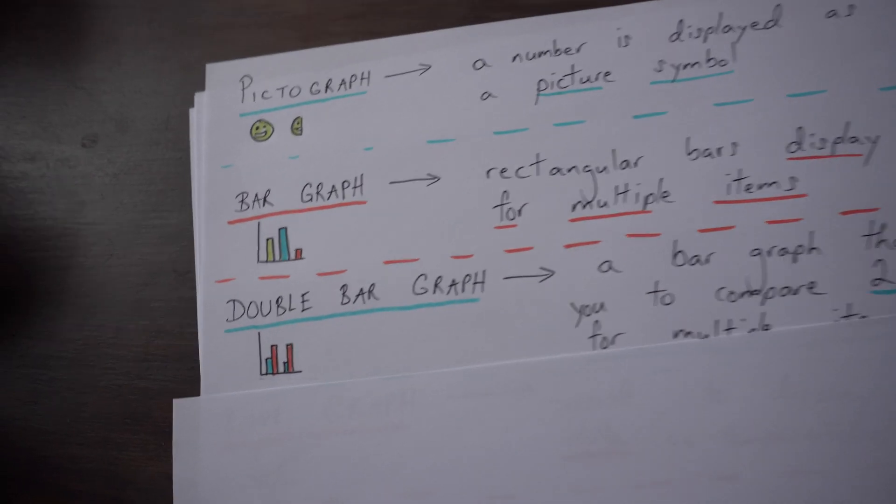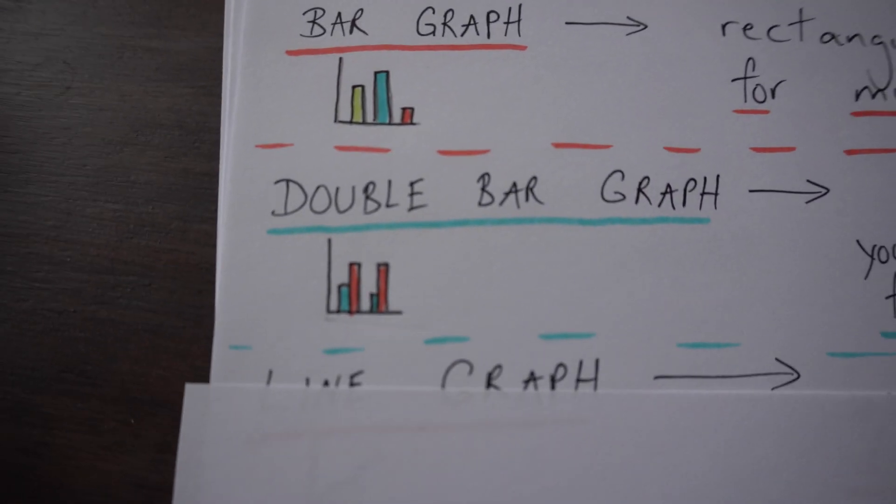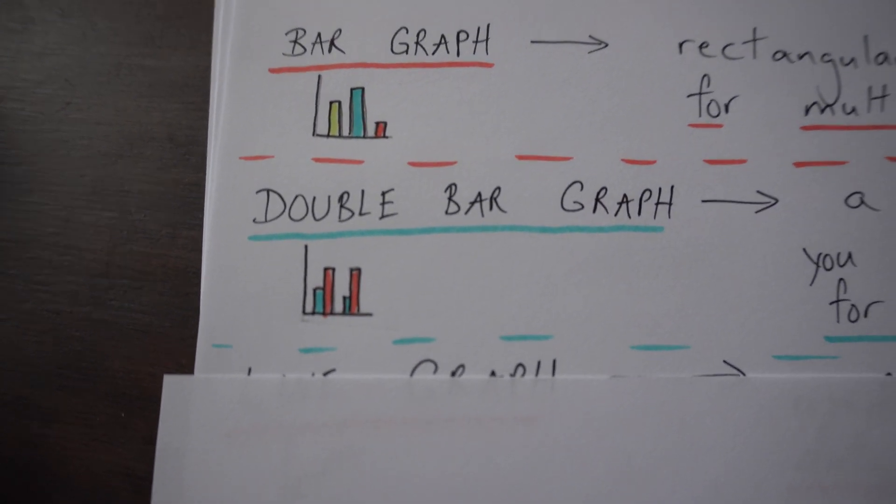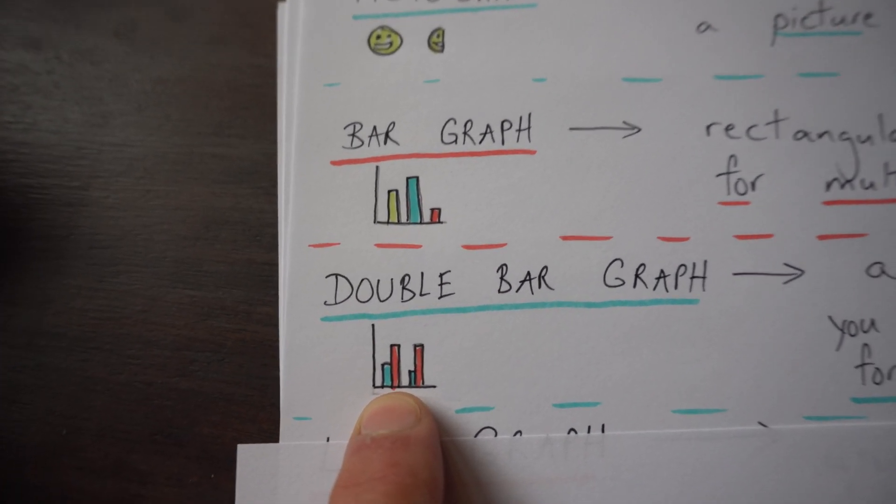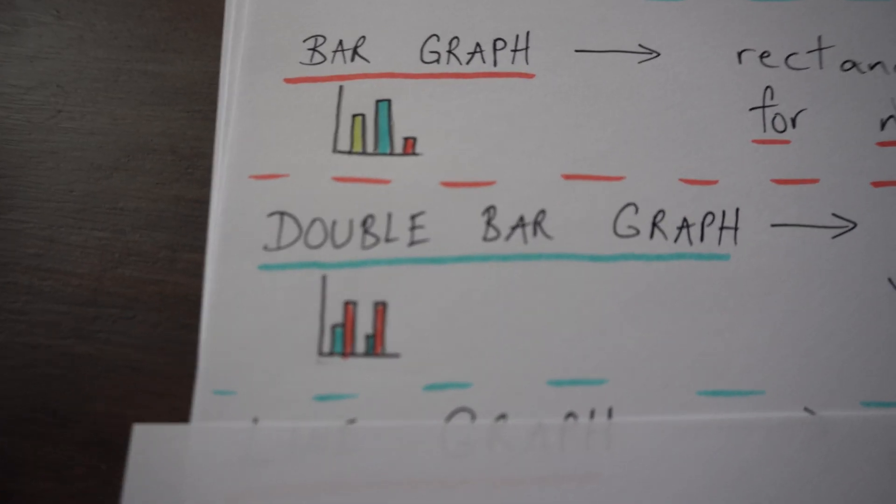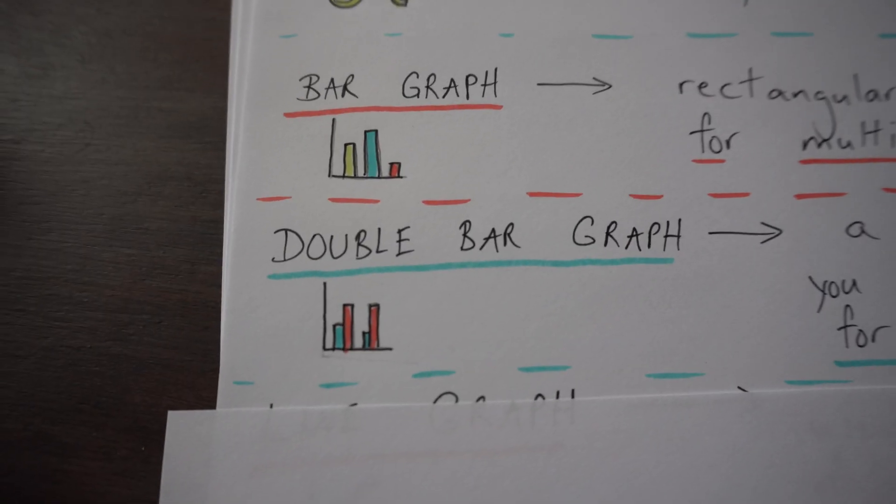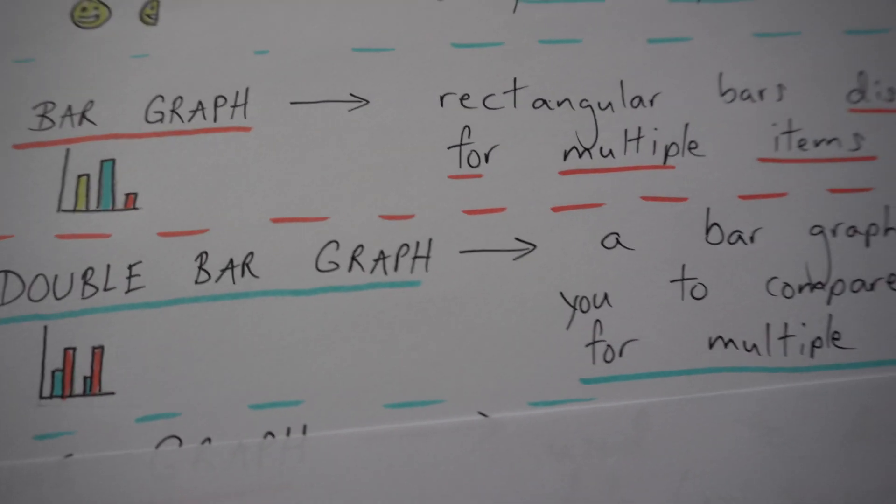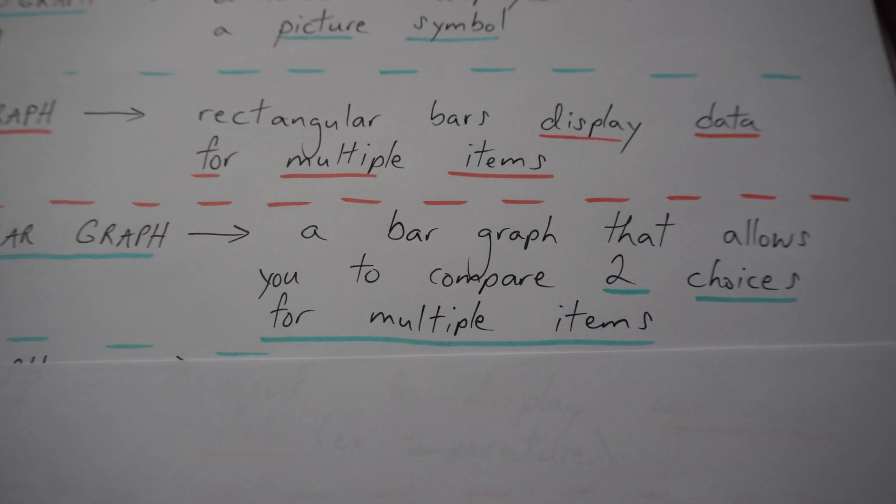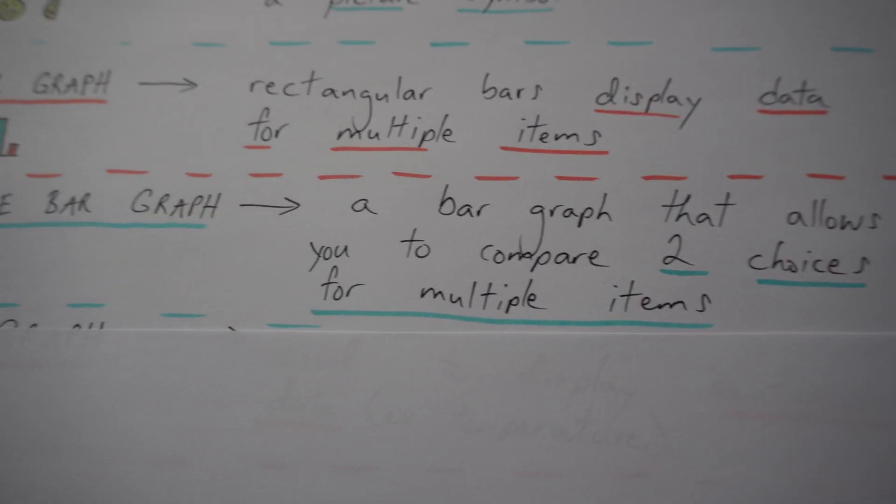The next one is a double bar graph, and that's basically like two bar graphs in one. You'll see how I colored one blue and one carmine red. And what that lets you do is take one set of data and compare it to another set of data. So again, I wrote: a bar graph that allows you to compare two choices for multiple items.